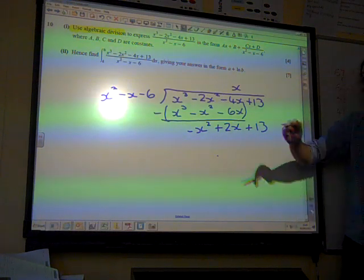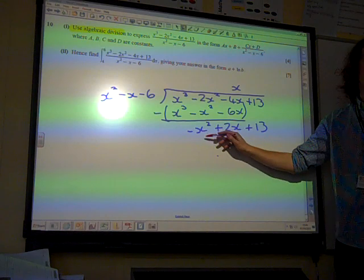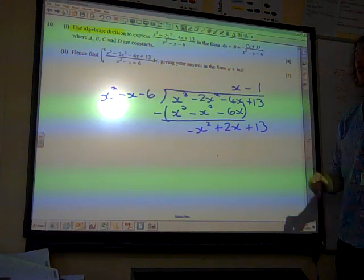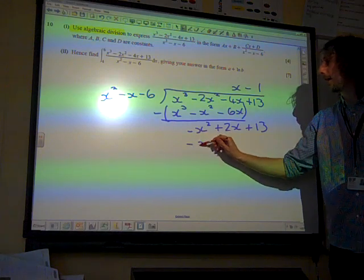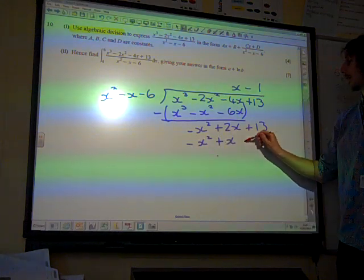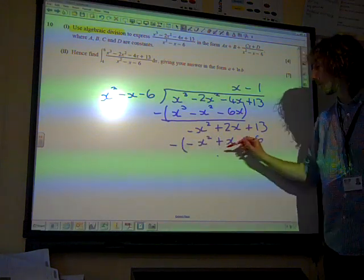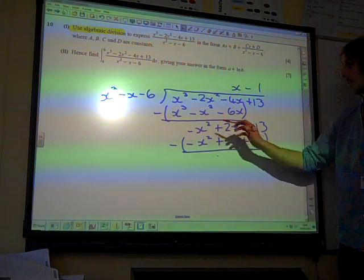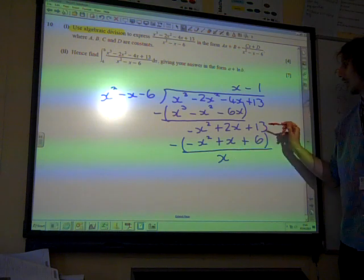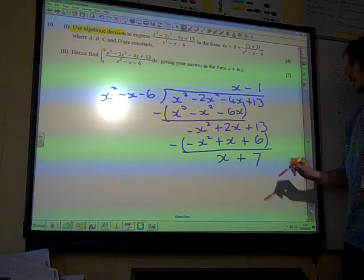What do we multiply X squared by to get minus X squared? Minus 1. Which gives us minus X squared plus X plus 6. Subtracting. Again, really careful with the signs. 2 minus 1 is 1, 13 take away 6 is 7.